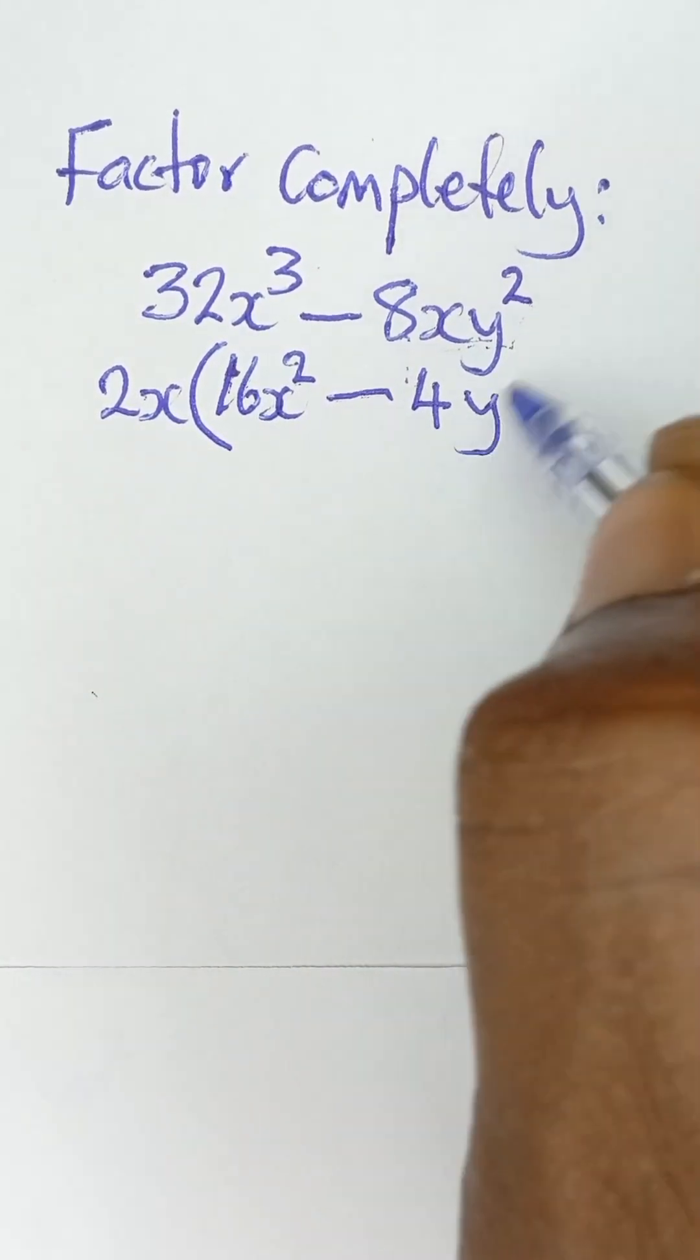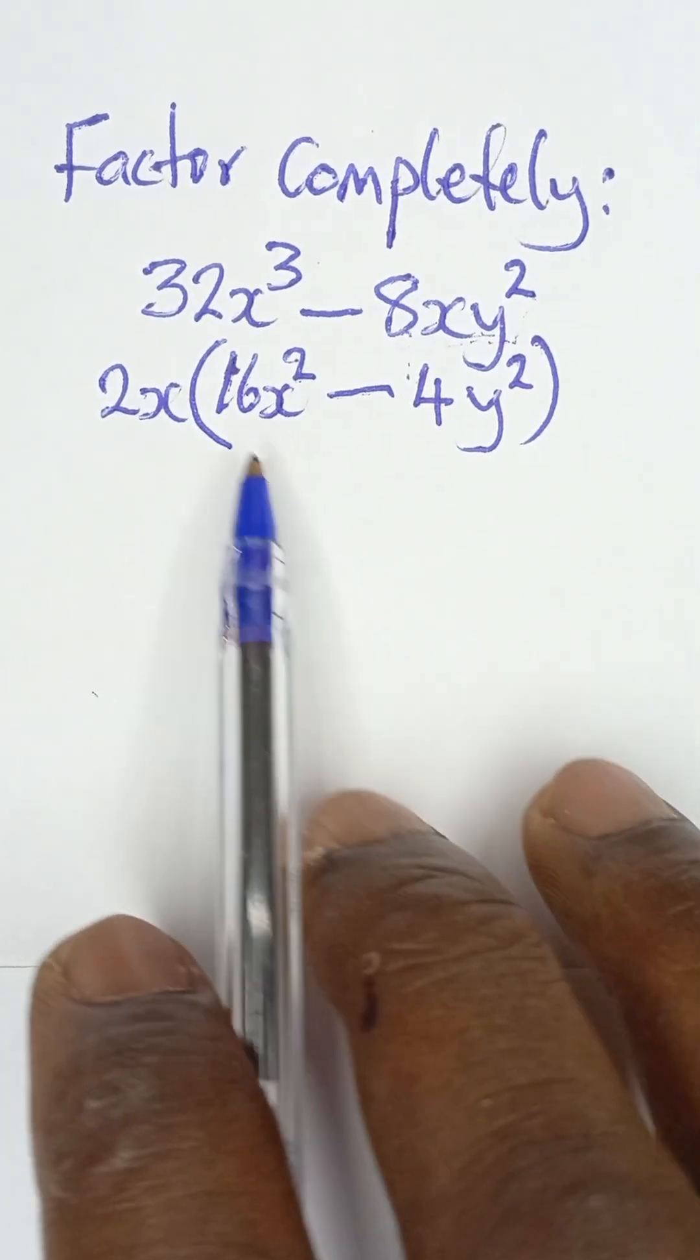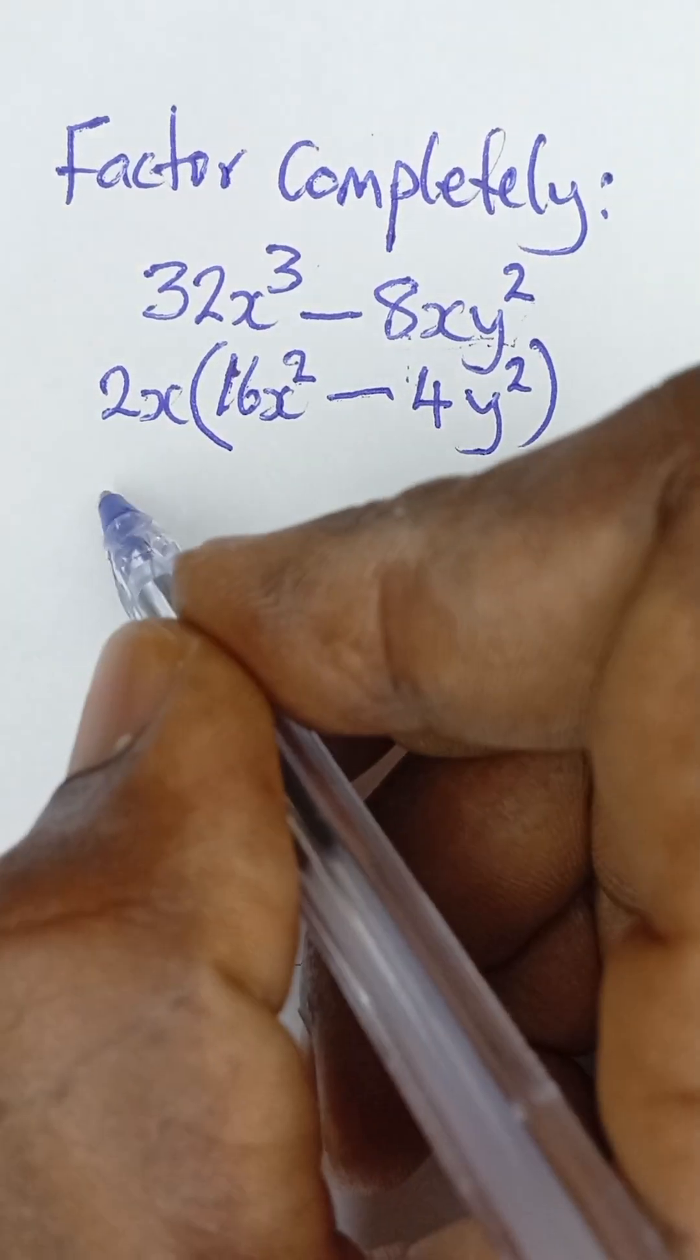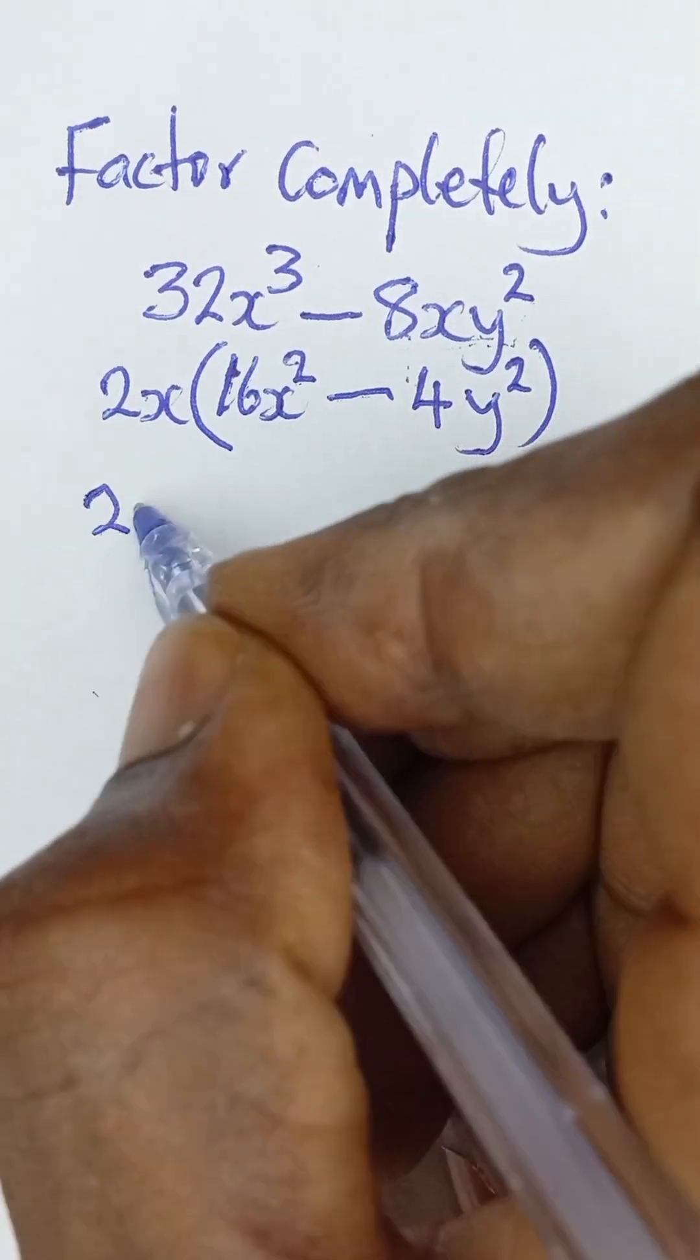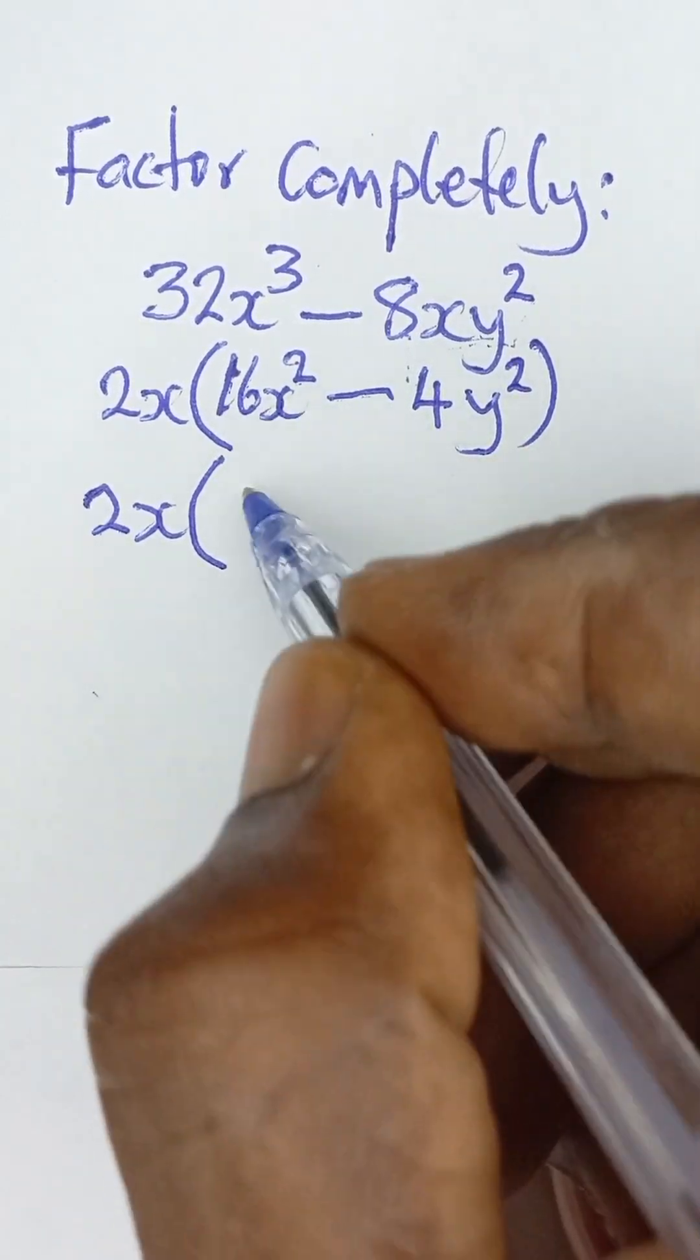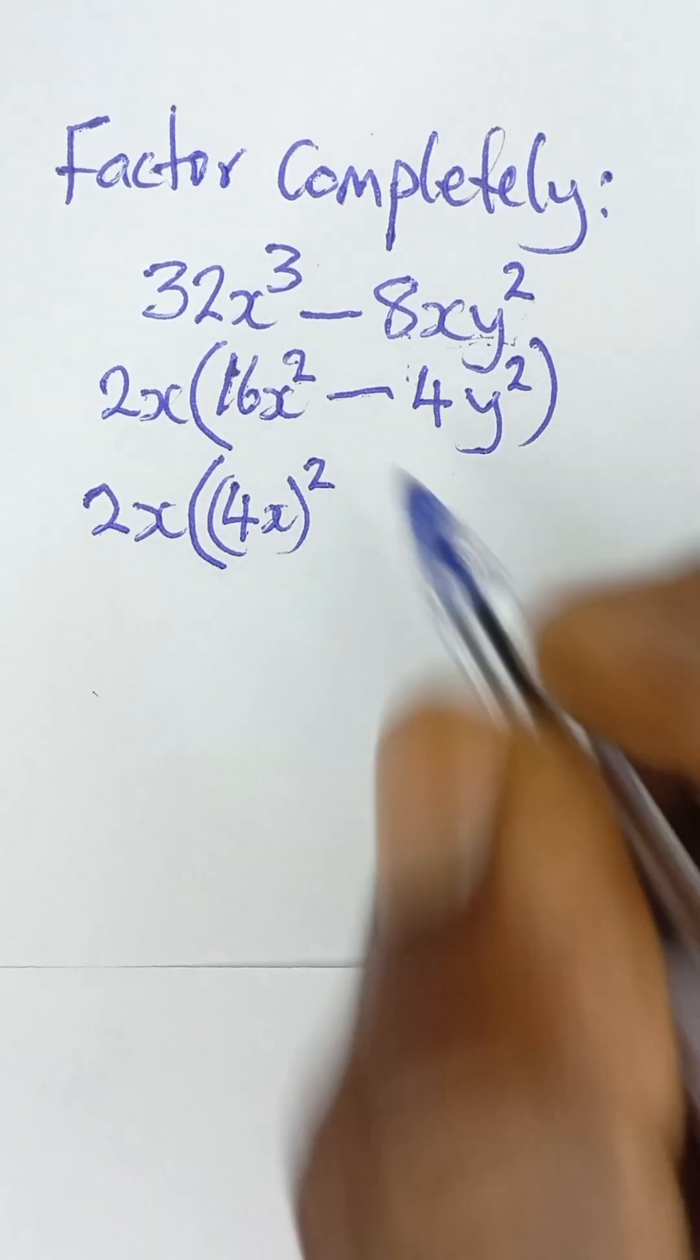Now that I have this, looking at these two terms I can see that this is a difference of two squares. So that means I can write it as 2x, bracket open, the square root of this is simply 4x, and then I can put square.